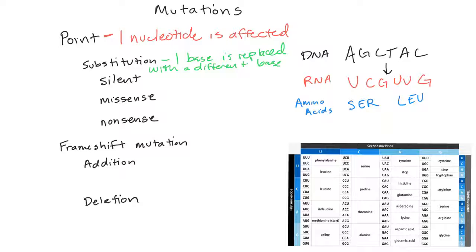So let's say this C was changed to a G. That would make this RNA change to a C. And the amino acid would be the same, because UCC and UCG code for the same thing.